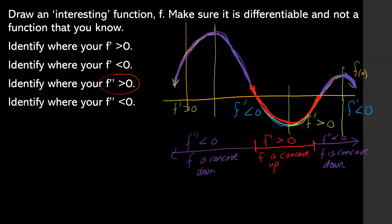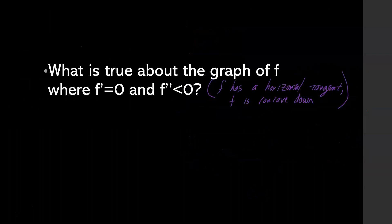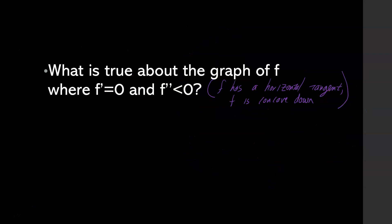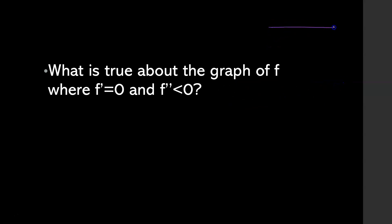Horizontal tangents are pretty easy to figure out — that's right up here, down at this minimum, and up at this local maximum. We want f to have a horizontal tangent and f to be concave down at the same spot. That's right here and right here at the two local maximums. So we want f to have a horizontal tangent and f to be concave down — and the answer is: f has a local maximum.